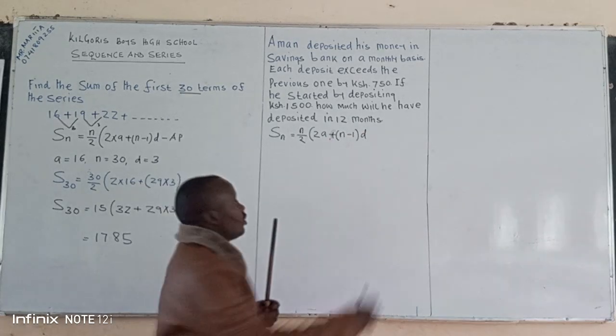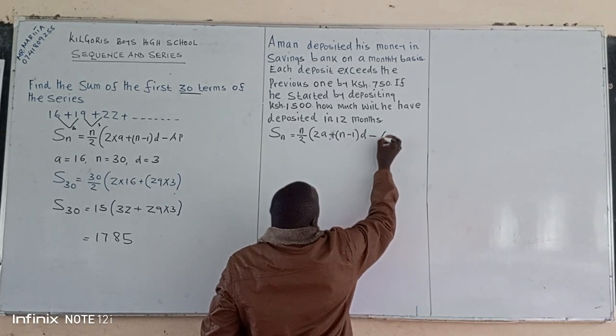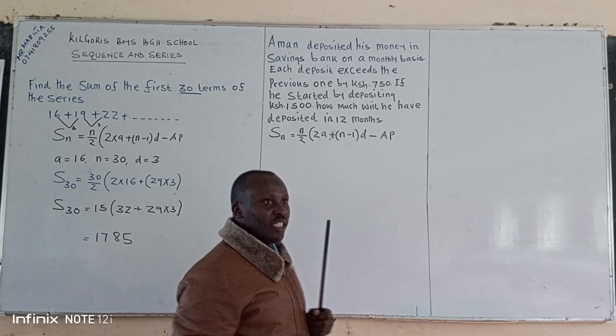Where d is our common difference. So we can have this one as an AP formula, the arithmetic progression.